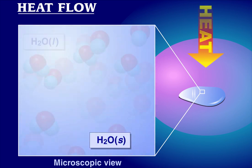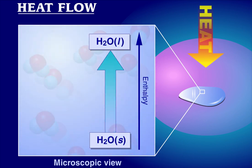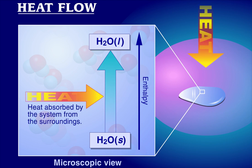Measurements show that for every mole of ice converted to liquid water at zero degrees Celsius and a pressure of one atmosphere, 6.01 kilojoules of energy is absorbed by the system, the ice, from the surroundings.